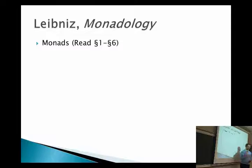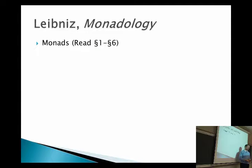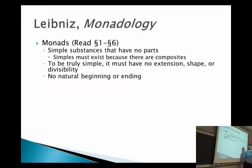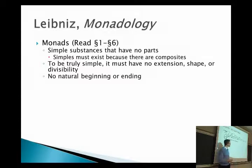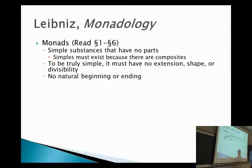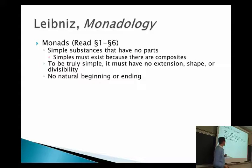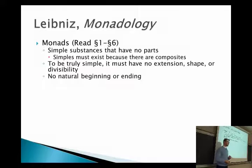This is very similar to an argument Socrates gives for the immortality of the soul. Socrates says the soul is a simple thing — it has no parts — so when you die, it can't be dissolved, and therefore your soul continues to live on. Similarly, monads are simple substances that have no parts. They are simples that must exist because there are composite things. Since there are composite objects, we're led to wonder what their parts are — and the most basic kind must have no extension, shape, or divisibility. Only God is capable of creating and destroying monads.